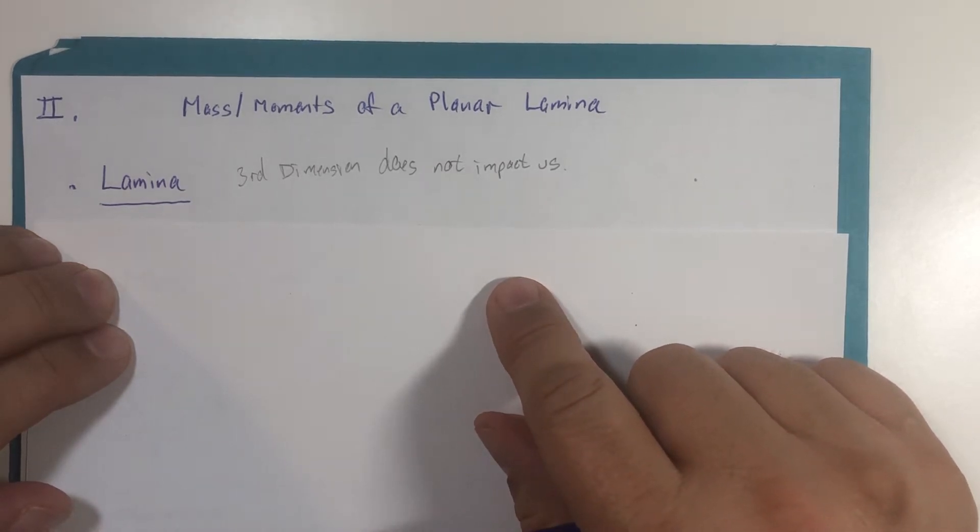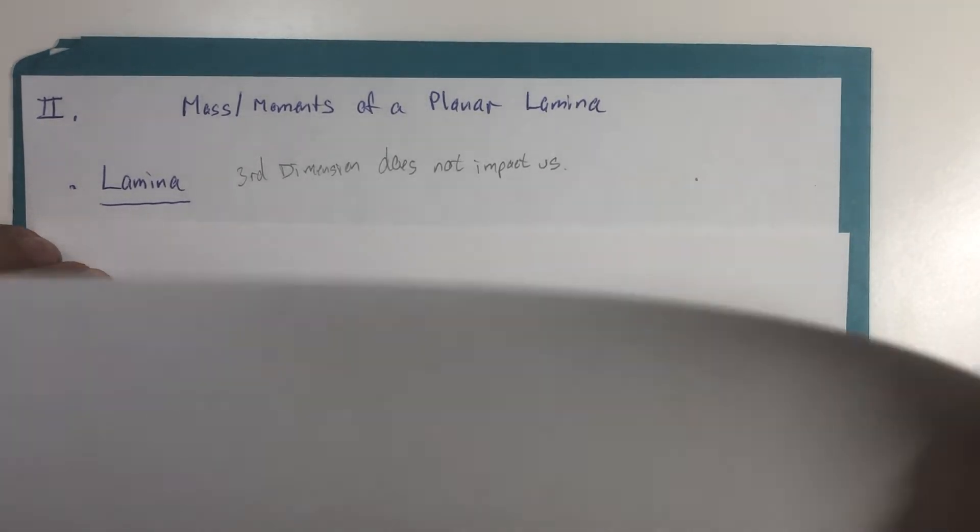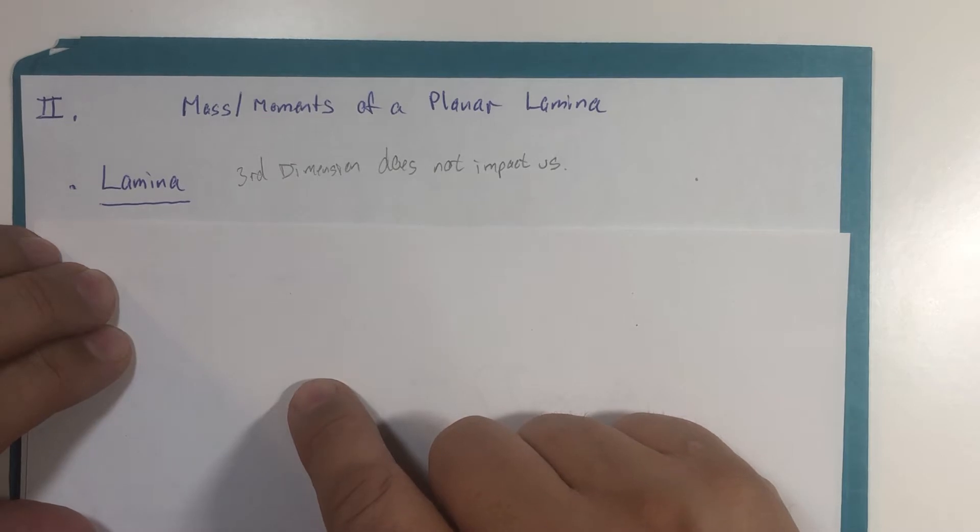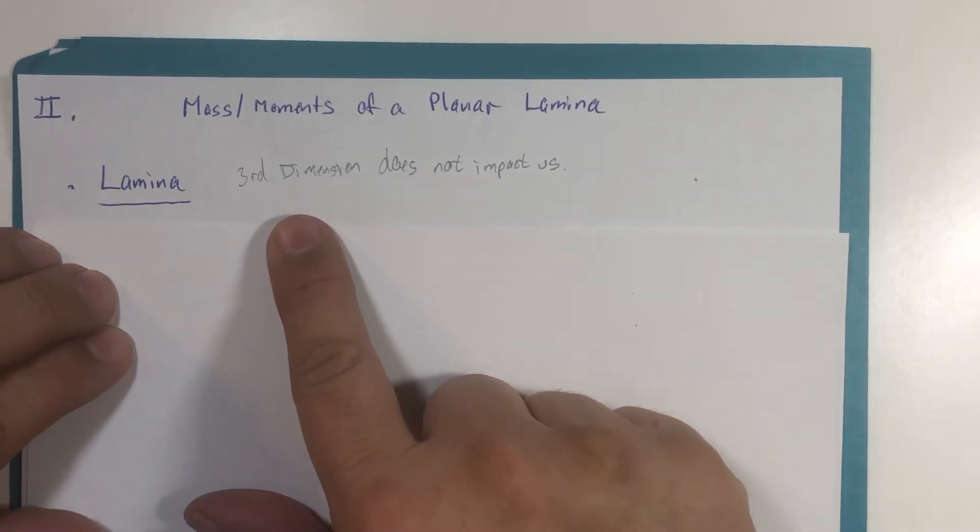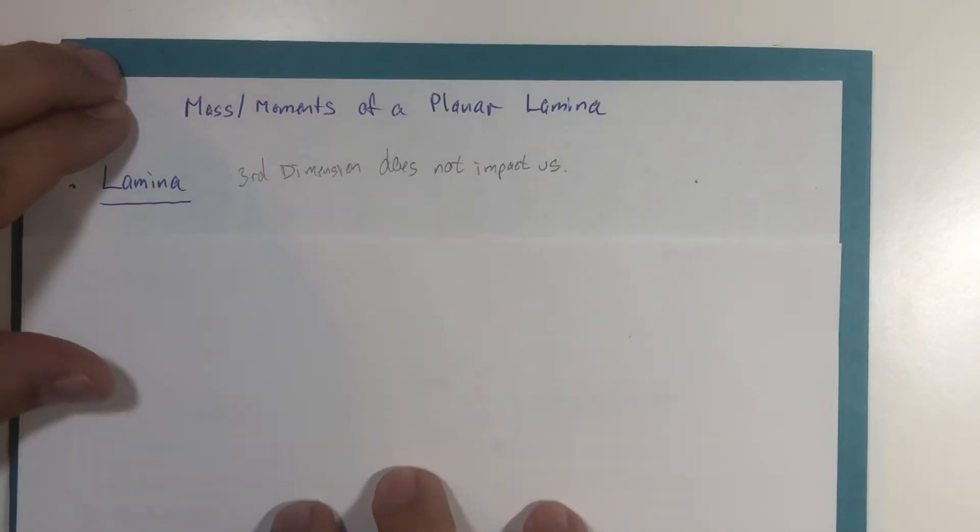So you really need three dimensions to talk about something's mass. So a planar lamina, for example, could be a piece of paper—very thin. We're just going to treat a planar lamina as it's got an extraordinarily thin third dimension, so it doesn't change the value of the problem.